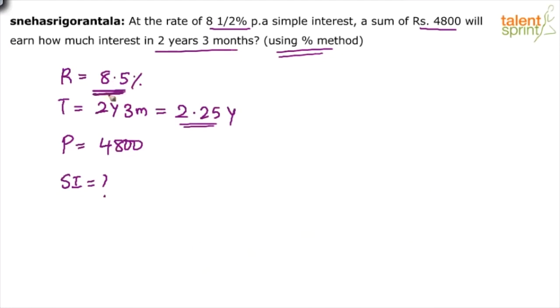He is getting 8.5% per year. He gets 8.5% per year. So, how much will he get in 2.25 years? So, I can say the simple interest is going to be 8.5 into 2.25%. That's it. What is different here? 8.5% every year for 2.25 years.